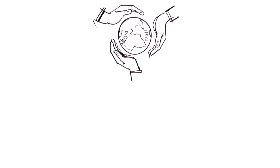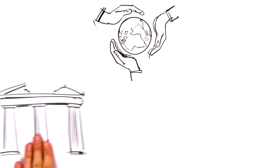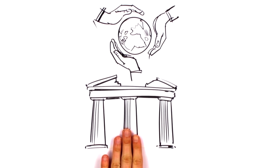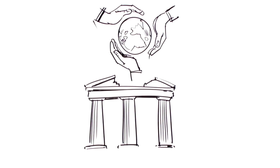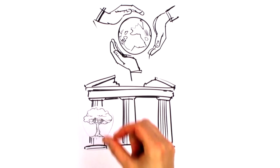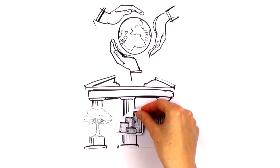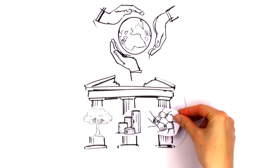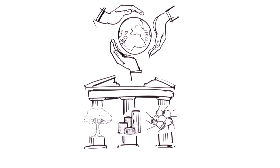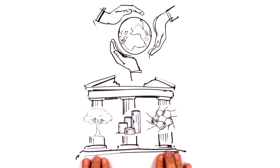Nowadays, sustainability is seen as a global concept. This can be explained with the help of the three-pillar model. The model is based on environmental, economic, and social considerations, which must always be regarded as belonging together.